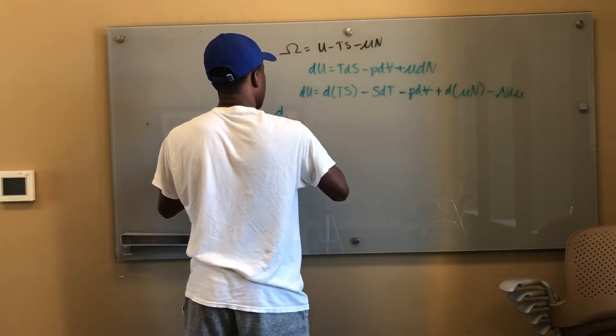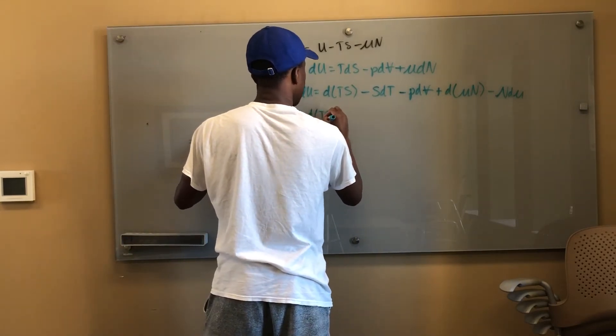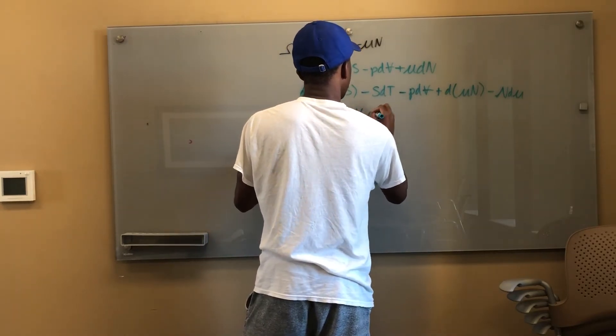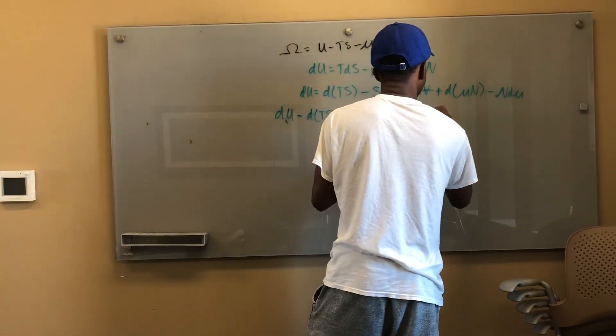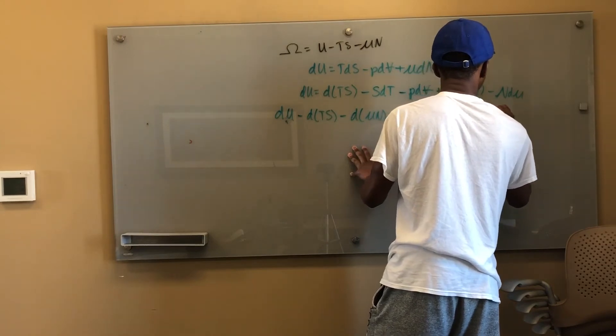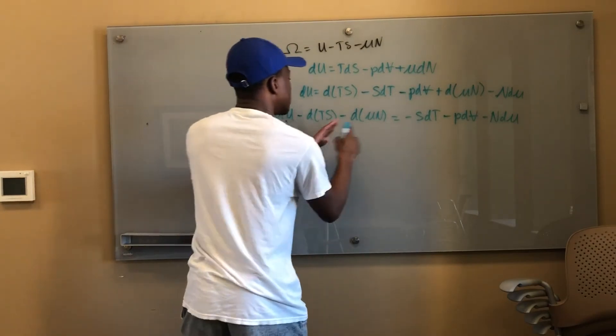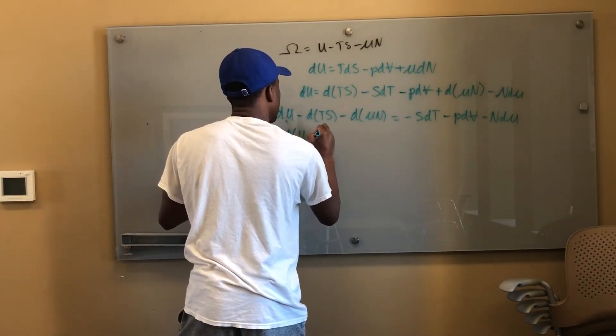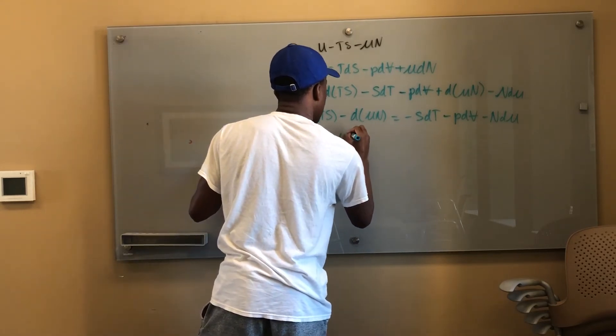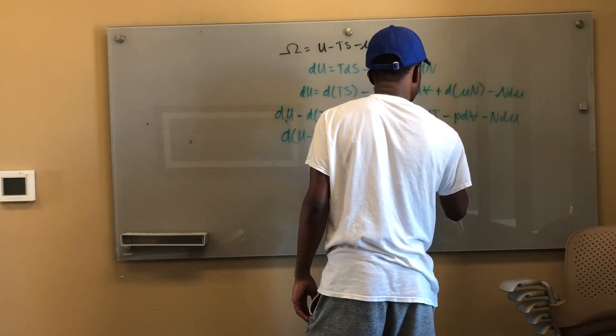I can move everything over here. Let me do this one step at a time. dU minus d(TS) minus d(μN) is equal to negative SdT minus PdV minus Ndμ. I can combine all of these because these are all differentials: d(U - TS - μN) is equal to negative SdT minus PdV minus Ndμ.